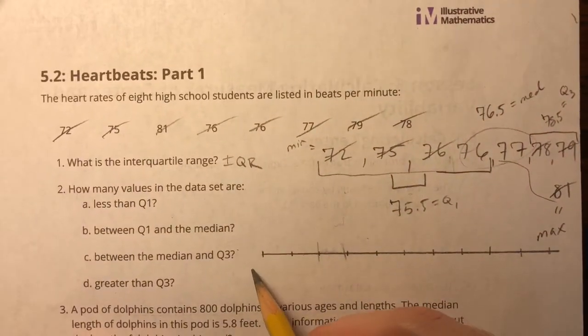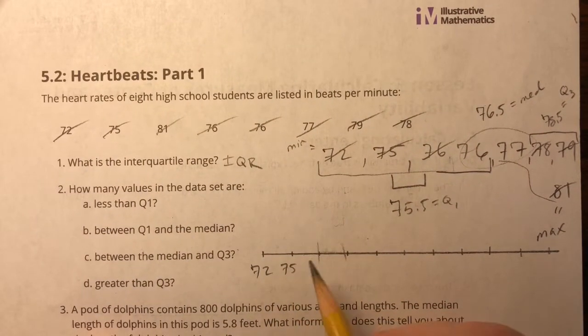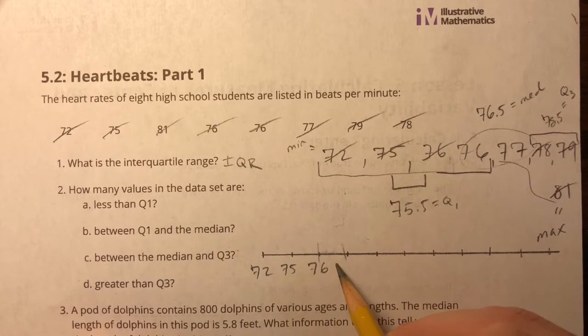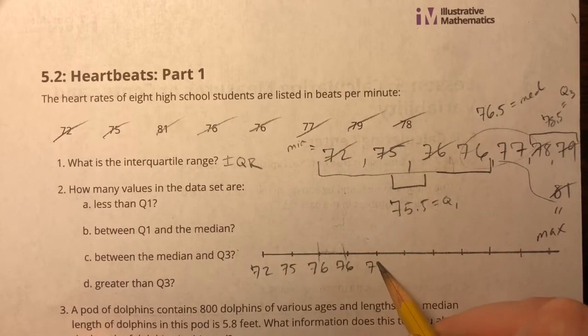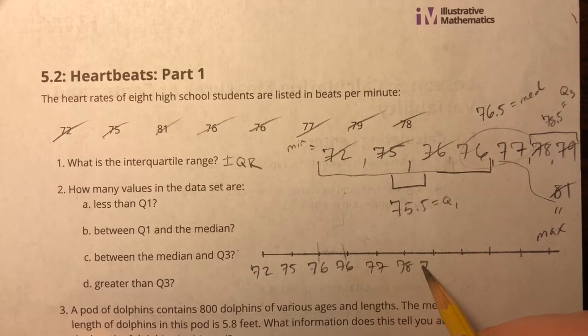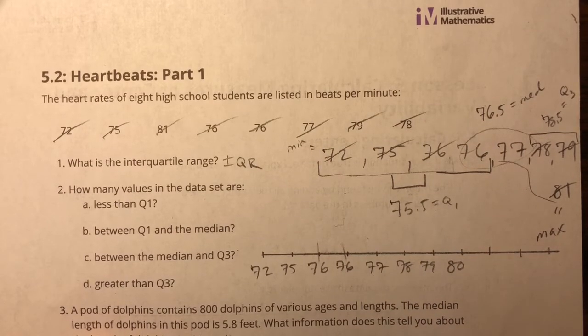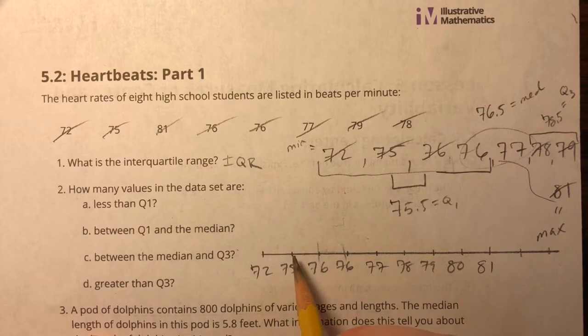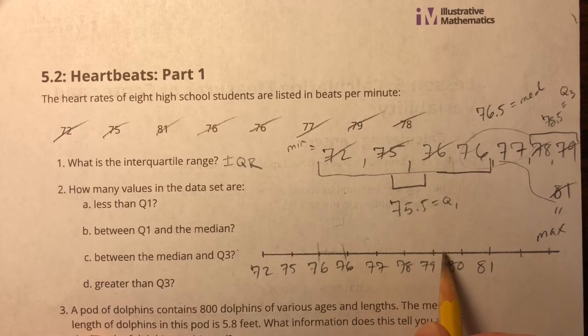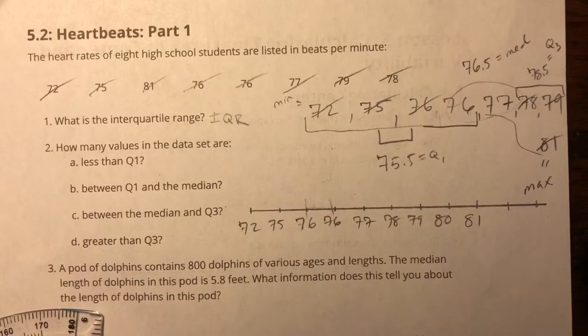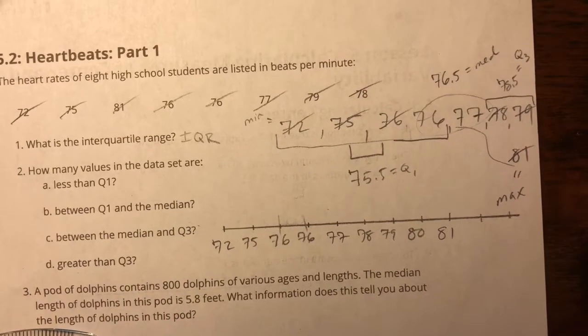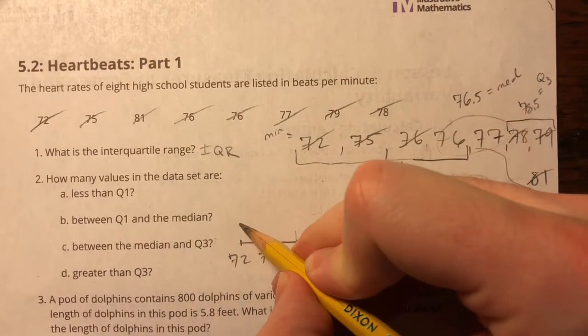Okay. Starting off with 72, 75, 76, 76, 77, 78, 79, 80. Did I make a mistake? 1, 2, 3, 4, 5, 6, 7, 8, 9. I guess I just added more than I needed. That's fine.